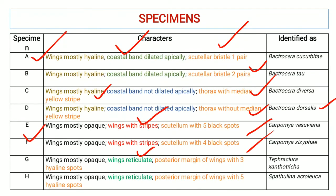Specimens that have opaque wings, wings with stripes, and scutellum with five black spots are Carpomya vesuviana. Specimens that have opaque wings, wings with stripes, and scutellum having four black spots are Carpomya zizyphei.